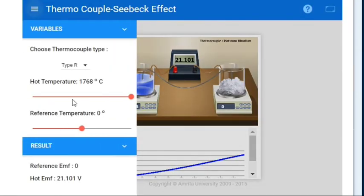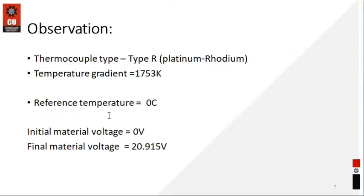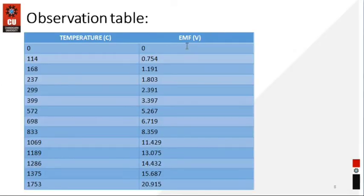After that I have taken the temperature gradient. In the simulation part, the temperature gradient is our hot temperature where we have stopped our temperature slider. The hot temperature slider I have taken here is 1768 or 1767. After that you can see the reference temperature — I have taken the reference temperature as zero degrees Celsius with no change. The initial material voltage is the value from where we have taken the EMF.